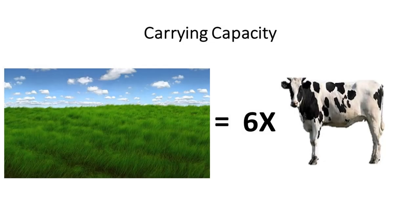Each environment has its own carrying capacity, meaning the area can only accommodate a certain number of population of individuals and species without exhausting its resources. In the said common pasture area, it can only accommodate six cows sustainably. When the population of cows exceeds six, the grass in the common cannot grow fast enough to accommodate the hungry cows. When this happens, the land may become barren, and there will come a time when the common area cannot be used for grazing cows anymore.